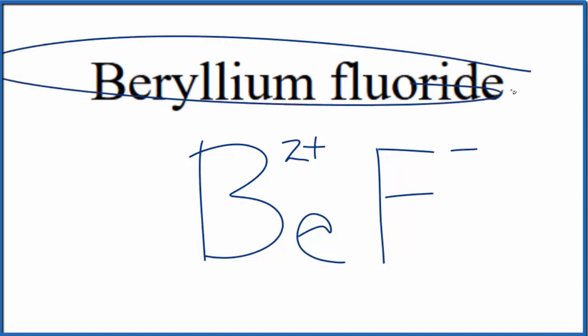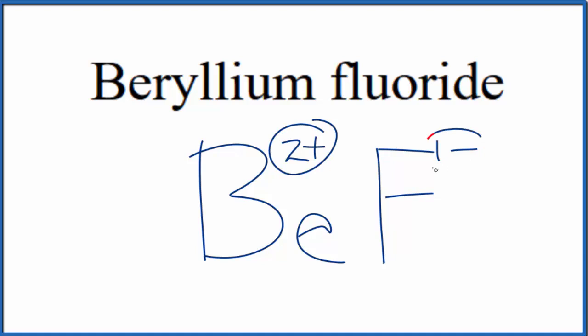Since this is neutral, we don't have the word ion after it. These two charges, the 2+ and the 1-, need to add up to zero, giving us a net charge of zero.